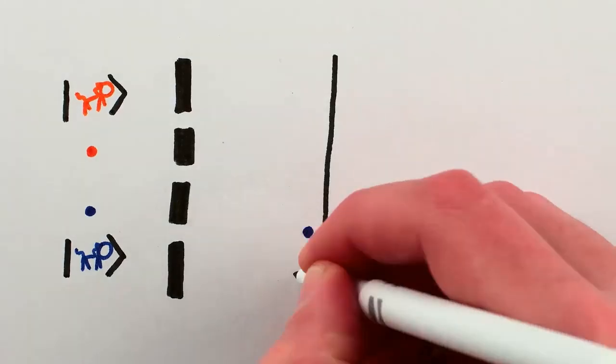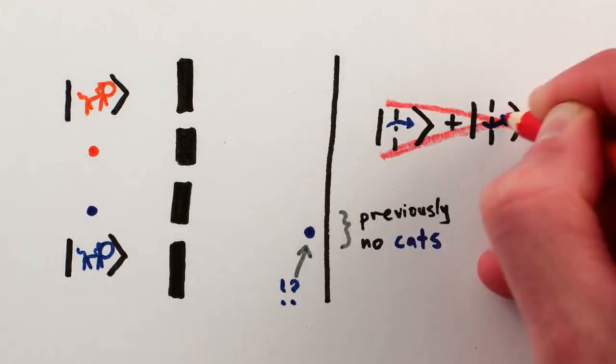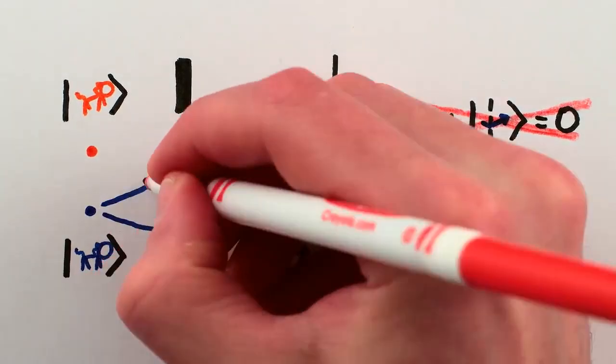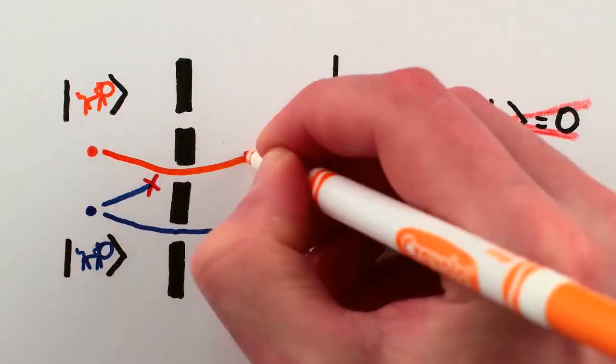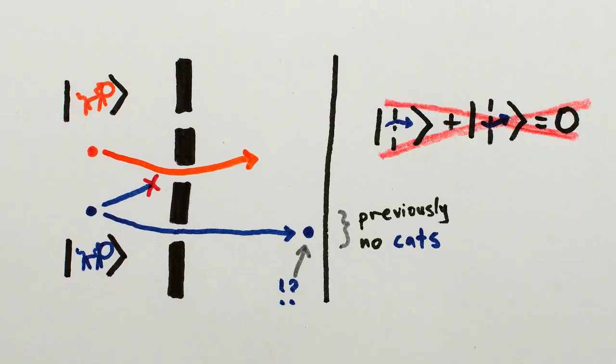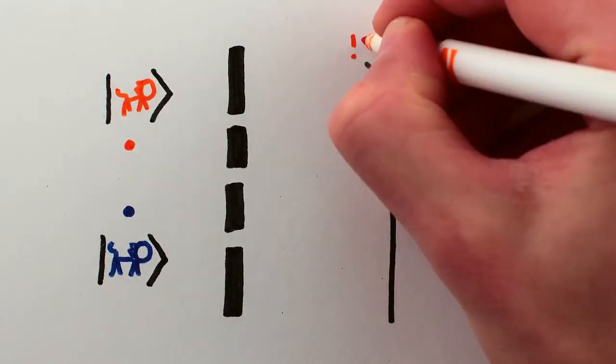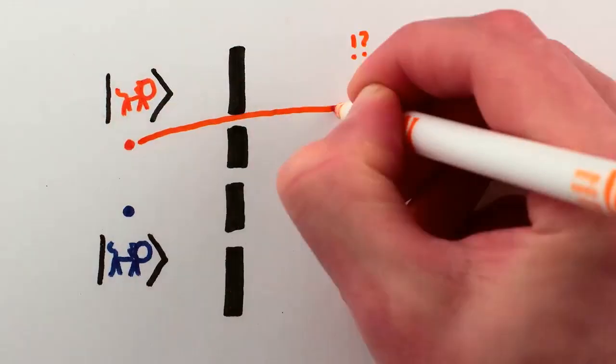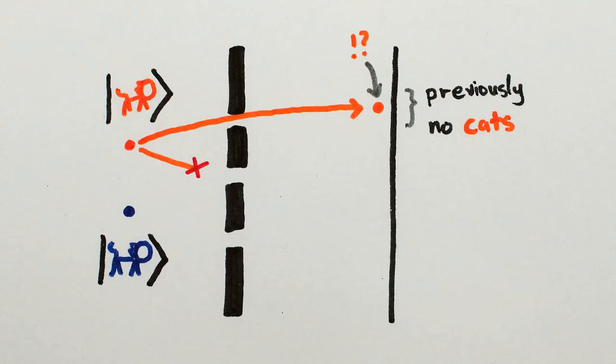So if the bottom cat does end up there, it must not have been able to interfere with itself. So it must not have gone through both slits. So the other cat must have been blocking the middle slit. And if the top cat ends up in its previously cat-free spot, then it must not have gone through both slits either. The bottom cat must have been blocking the middle slit.